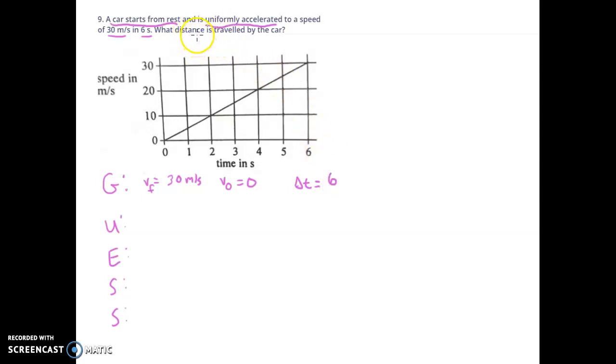And are we given anything else? We're given that it's uniformly accelerated. So we know a is uniform, which is an assumption we make actually in most of this class. And our unknown is, well, what is our distance traveled? What is our distance traveled?